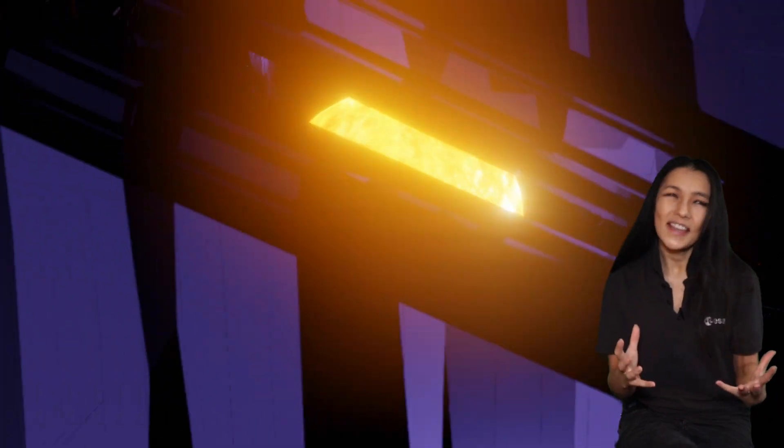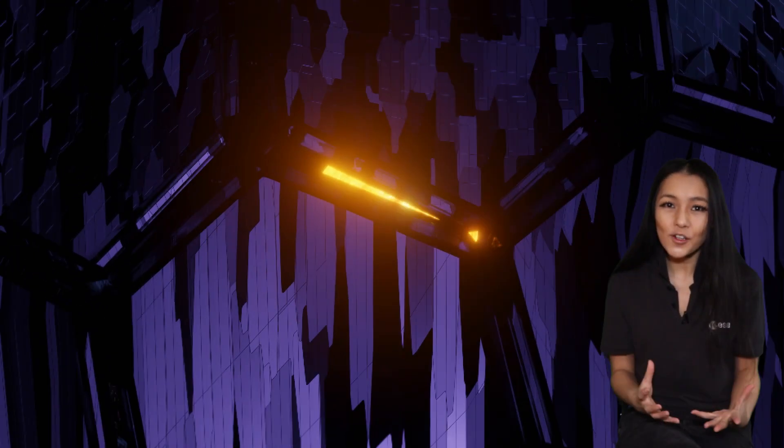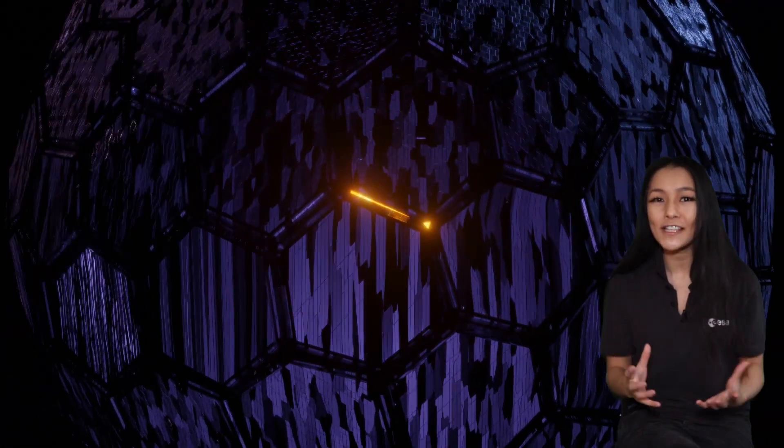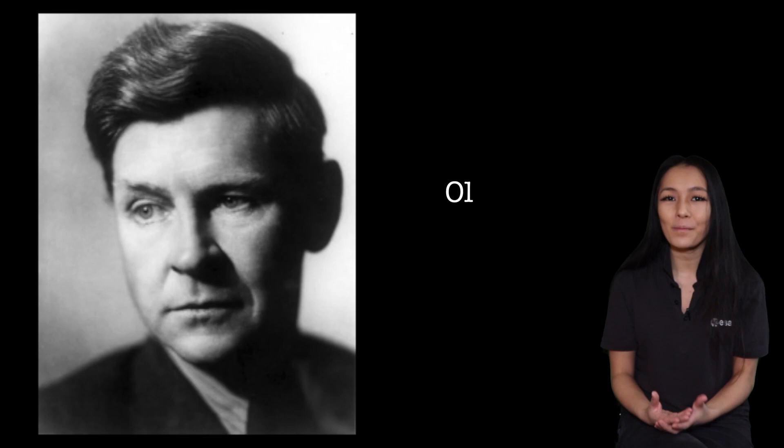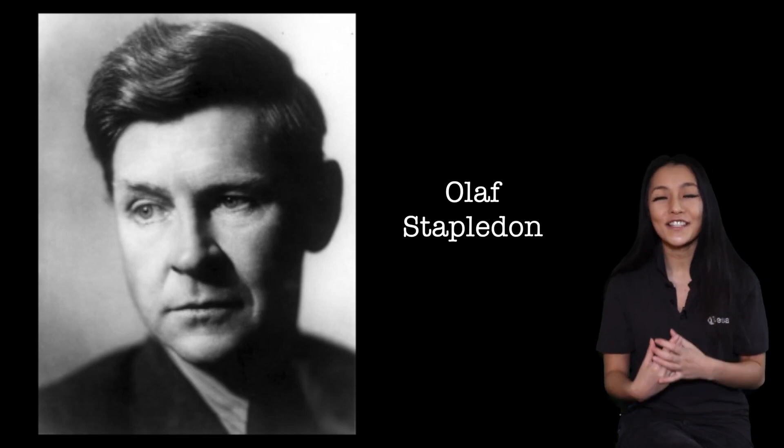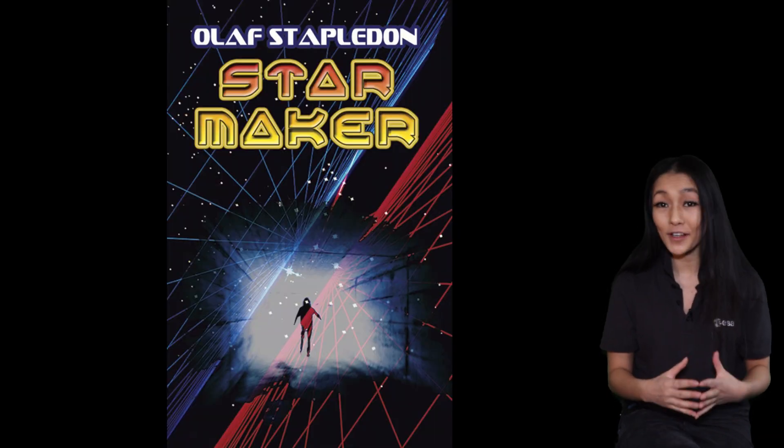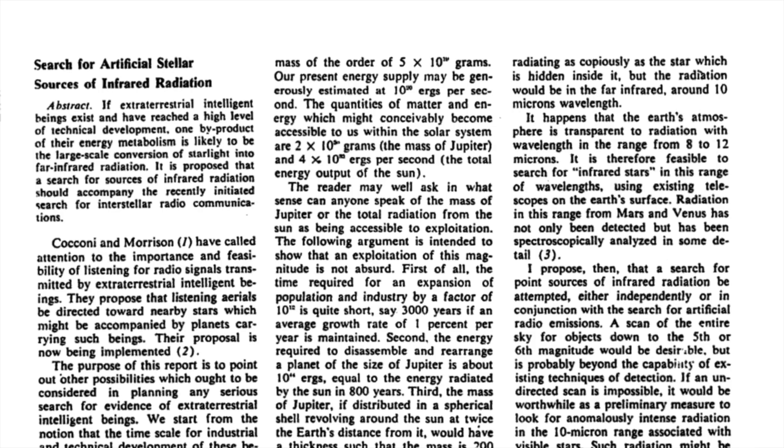A Dyson sphere is a hypothetical megastructure that encloses a star to harvest all of its energy. The original concept was actually first mentioned by Olaf Stapleton in his sci-fi novel Star Maker from 1937, but it was named Dyson sphere after Freeman Dyson who popularized it in his 1960 scientific paper Search for Artificial Stellar Sources of Infrared Radiation. I'll put a link to that down below.